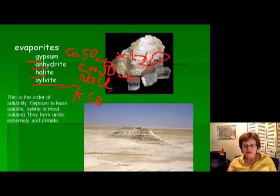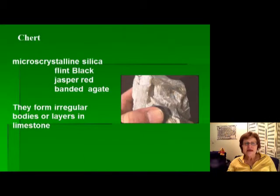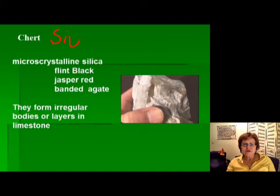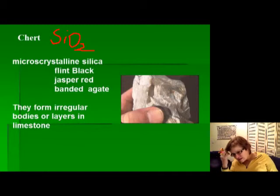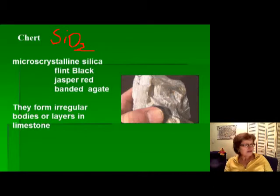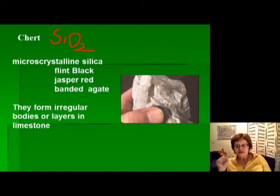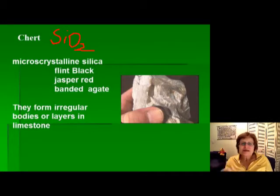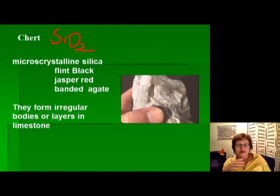The next rock is chert. Chert is microcrystalline silica — essentially the same as quartz, with the formula SiO2. It can be any color, so don't worry about color. As a mineral, remember it has a hardness of 7, conchoidal fracture, no cleavage, and it will scratch a glass plate. If it's banded, it's called agate; if it's red, it's jasper; if it's black, it's flint. They can have different colors, but they are all chert.